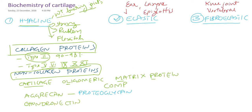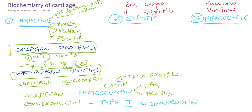Proteoglycan contains glycosaminoglycans — that is, heteropolysaccharides — along with proteins. Chondronectin connects type 2 collagen to chondrocytes, which are the cells of cartilage, similar to how osteocytes, osteoblasts, and osteoclasts are the cells of bone.